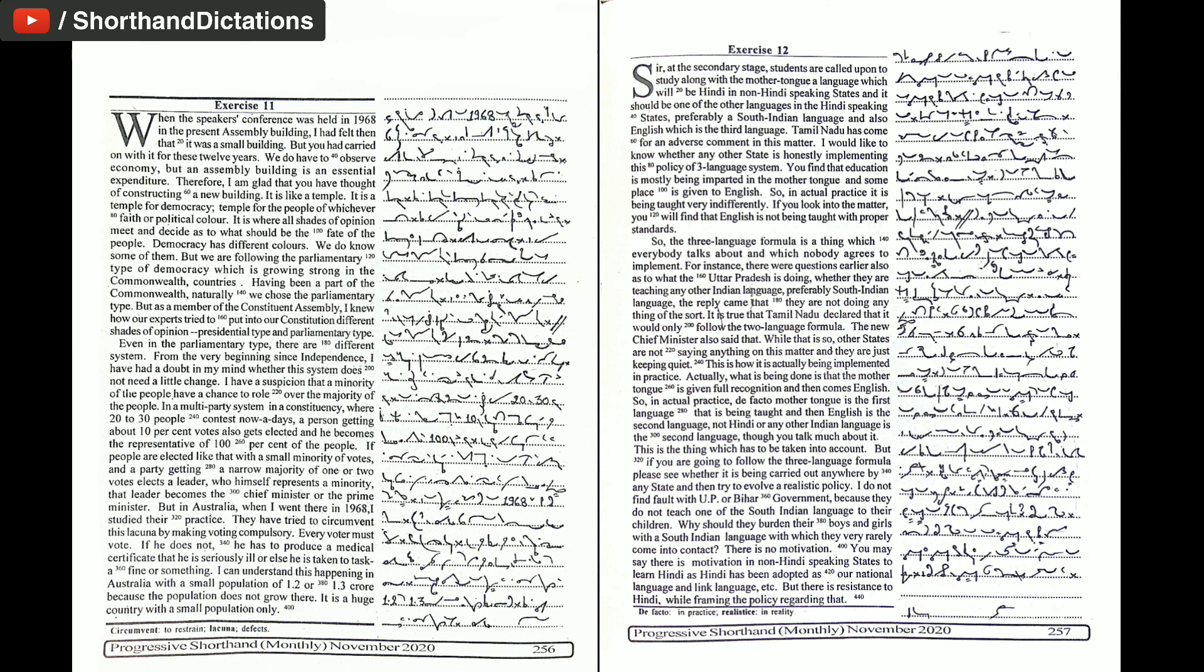From the very beginning, since independence, I have had a doubt in my mind whether this system does not need a little change. I have a suspicion that a minority of the people have a chance to roll over the majority of the people. In a multi-party system, in a constituency, where 20 to 30 people contest nowadays, a person getting about 10% votes also gets elected and he becomes the representative of 100% of the people.